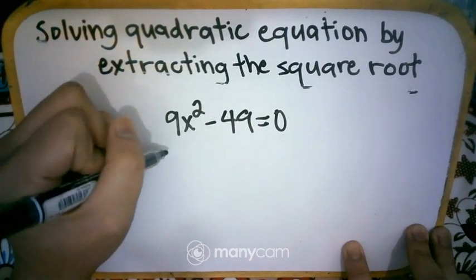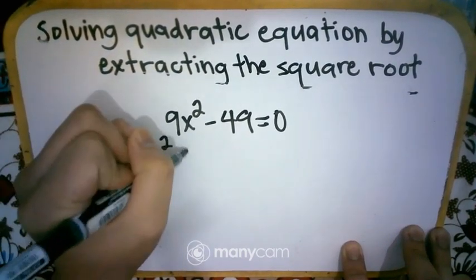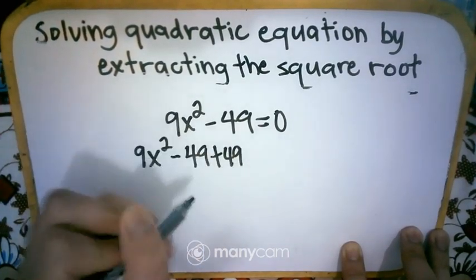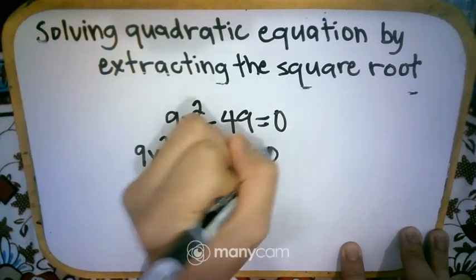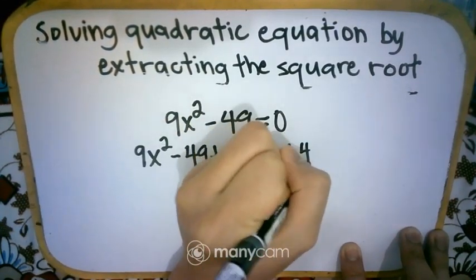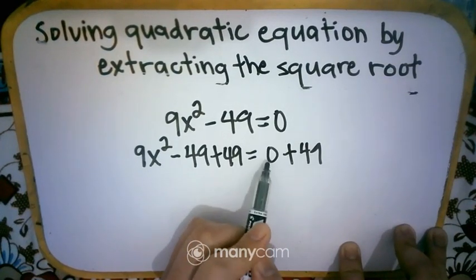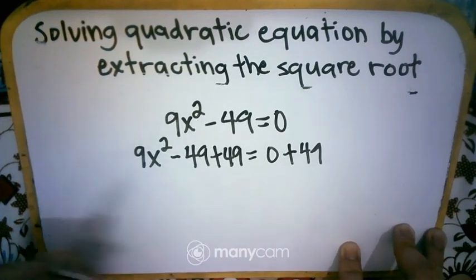So to remove that, we have 9x squared minus 49 plus 49, so that we can make this 0, is equal to 0 plus 49. Actually, you can do it directly. So just add 49, since 0 plus 49 is still 49.